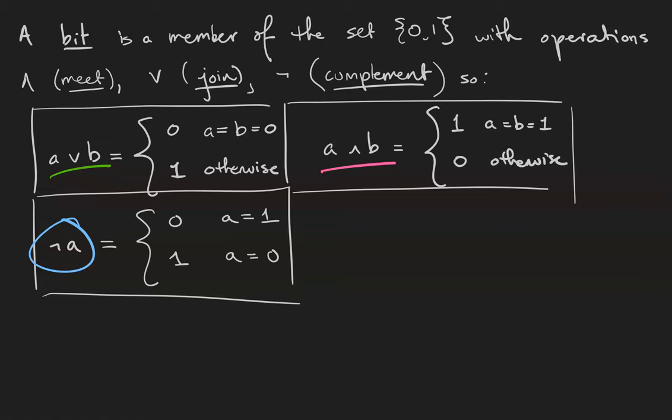For example, let's look at the bit 1 meet the complement of 0 join 1. 0 join 1 is 1, the complement of 1 is 0, and 1 meet 0 is 0.